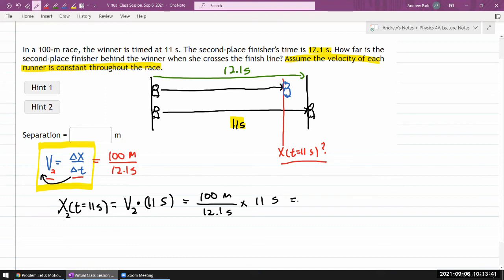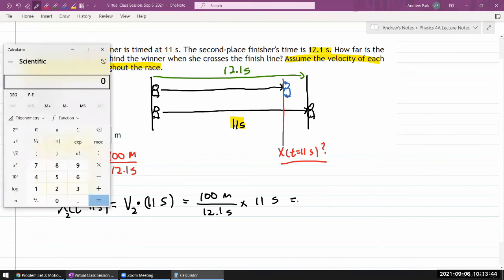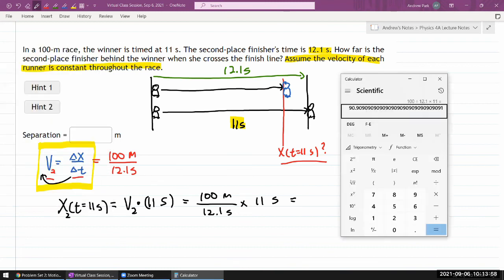100 divided by 12.1 times 11. That will give you the position, and this is where you have to read the question carefully. It's asking for how far behind the winner is. The winner is at 100 meters, so 90.9—I have to subtract that from 100. Let me store that into memory, and 100 minus recall from memory. So, 9.09 meters. Let me put in 9.09 so that I'm doing three significant figures.